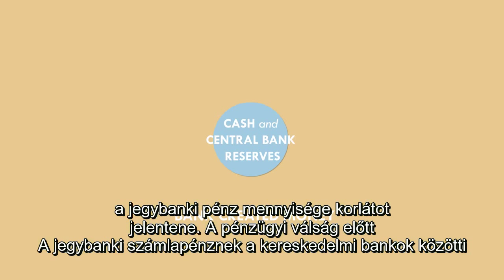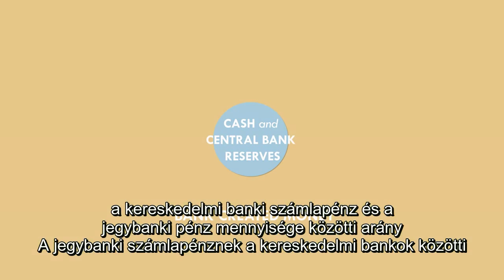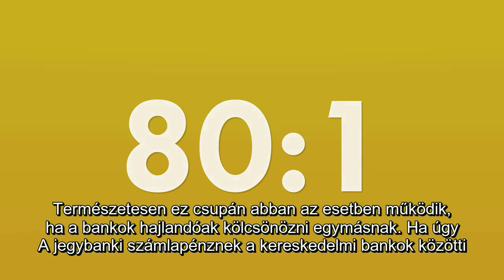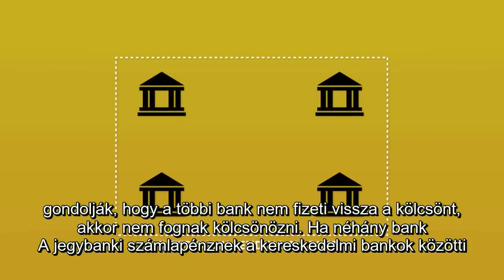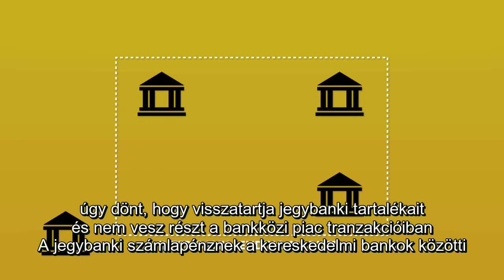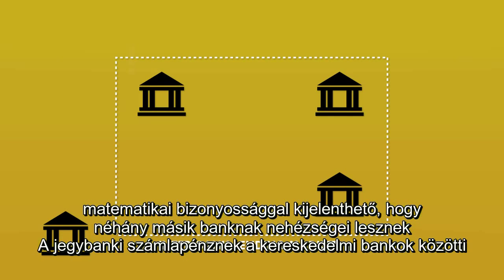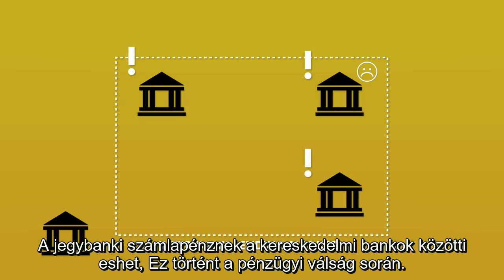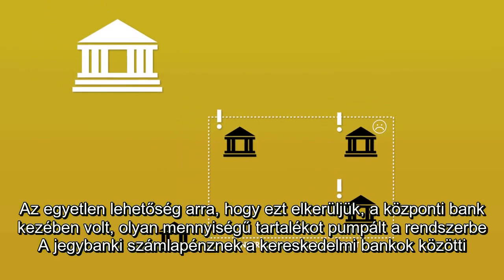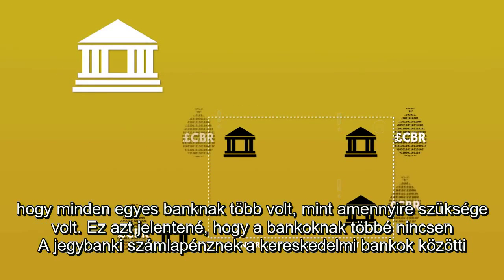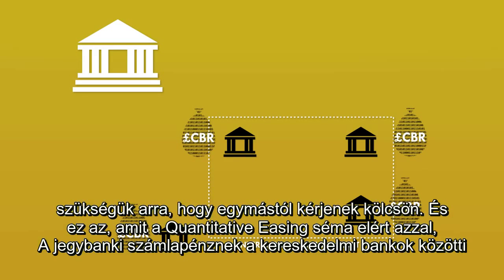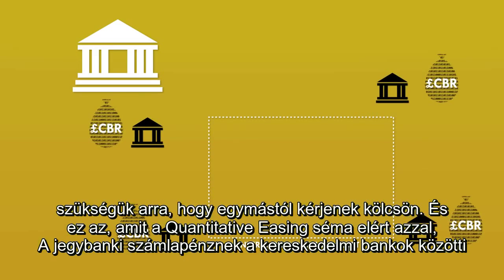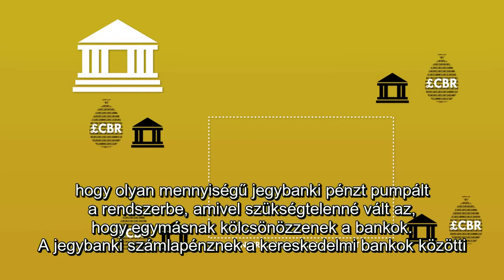In fact, before the financial crisis, the ratio between bank-created money in the hands of the public and central bank reserves was 80 to 1. Of course, this only works if the banks are willing to lend to each other. If they think the other banks might not repay them, they'll refuse to lend. If some banks decide to sit on their reserves and refuse to engage in the interbank lending market, it becomes mathematically certain that other banks will struggle to make their payments, and the entire payment system could very quickly fall apart. This is what happened during the financial crisis. The only way to avoid this is for the central bank to pump in such a huge quantity of reserves that every single bank has more than it needs — making interbank lending unnecessary. This is effectively what quantitative easing did.